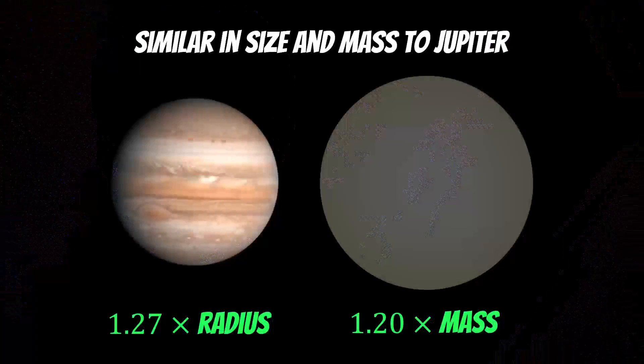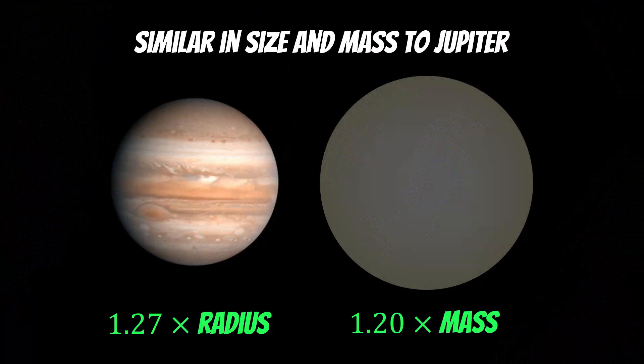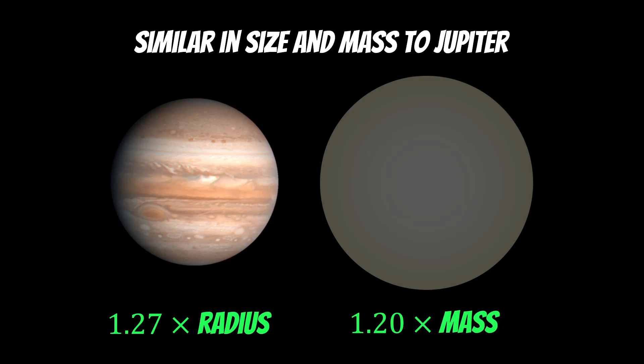To put it in context with a planet we're more familiar with, it's fairly similar in size to Jupiter and mass. Size-wise it's about 1.27 times the radius of Jupiter and about 1.2 times the mass, so a little bit bigger than Jupiter.